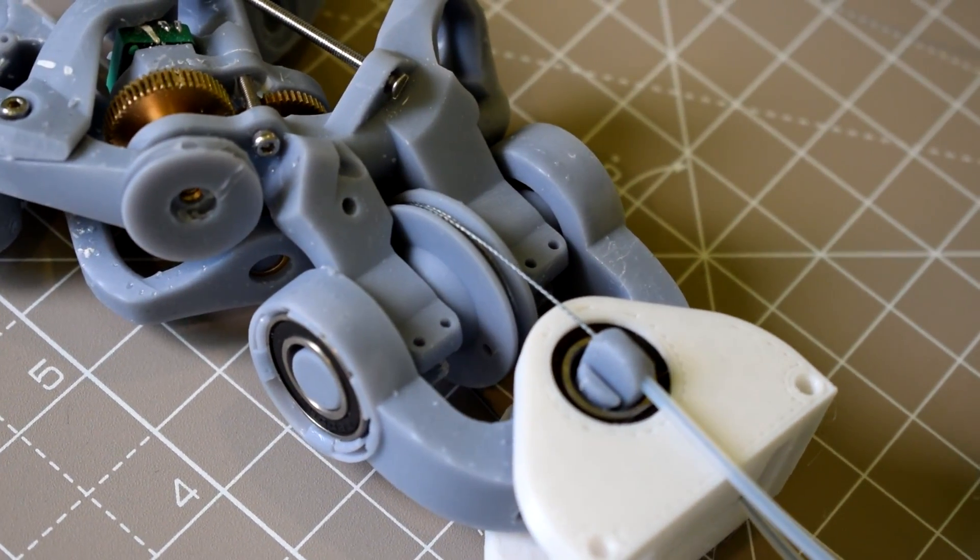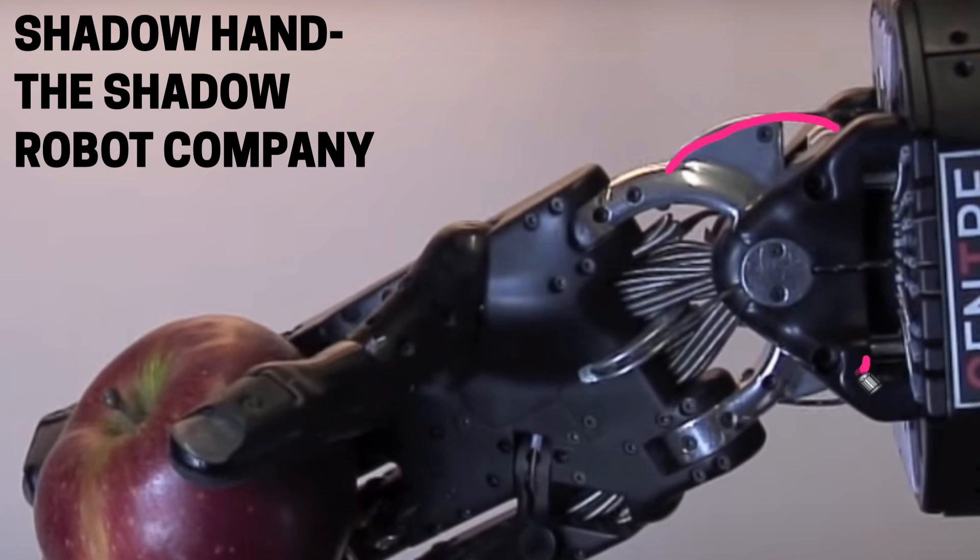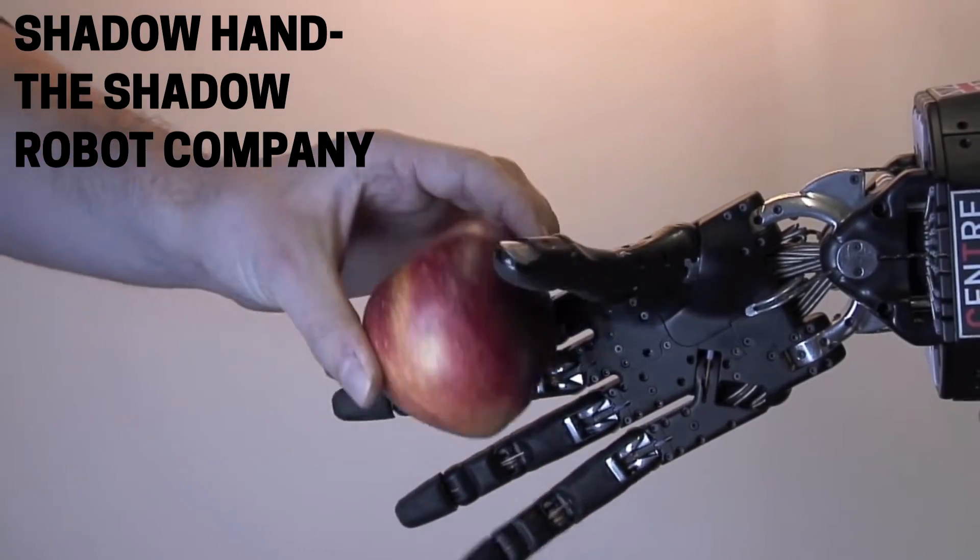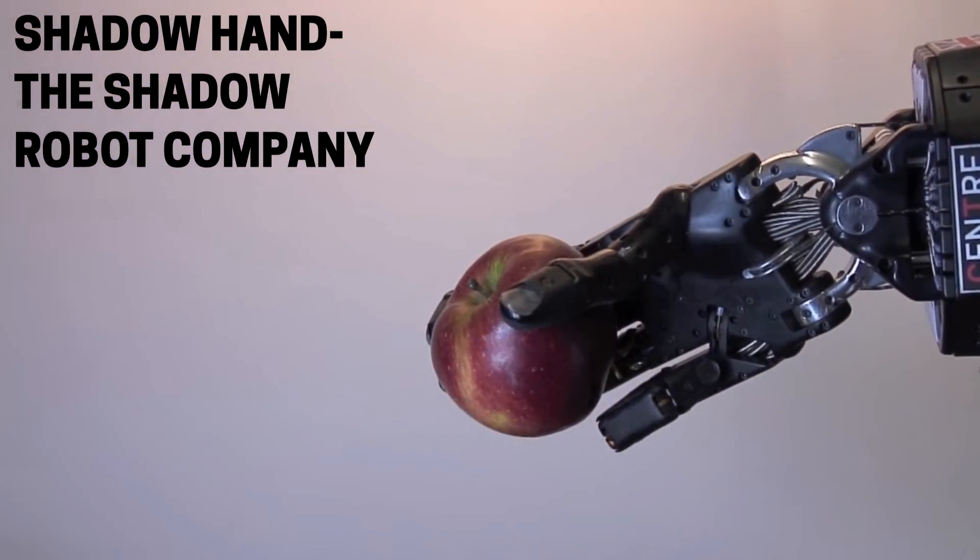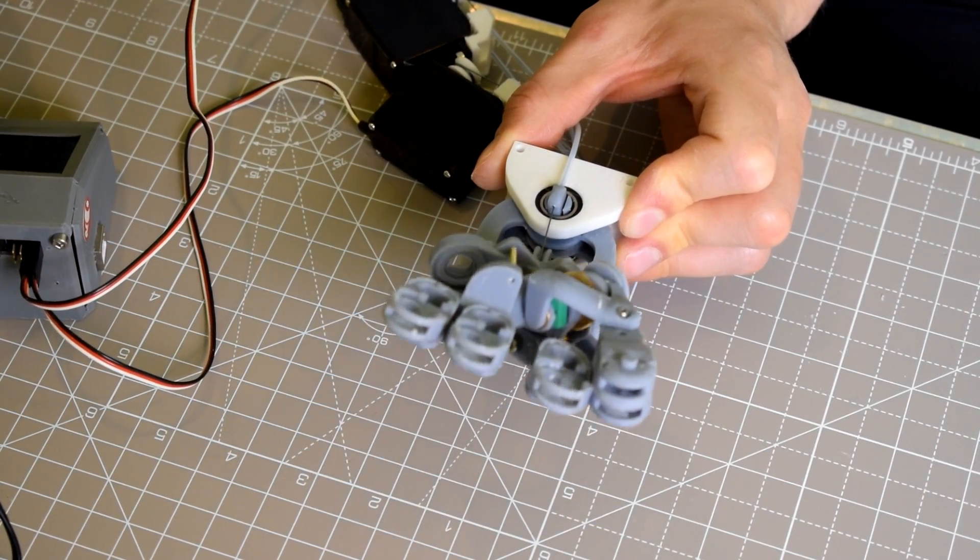Actually one of the differences between my design and the Shadow Hand's wrist is that they use a big mega pulley for the lateral motion of the wrist, which obviously gives it a ton of torque but detracts a lot from the speed. For my purposes I need a faster design, because my main focus as I mentioned before is biomimetic motion over strength, at least for the time being.